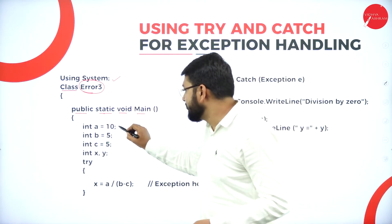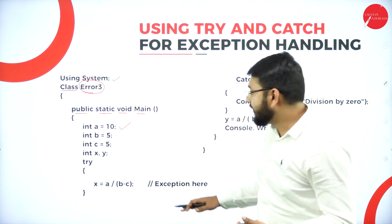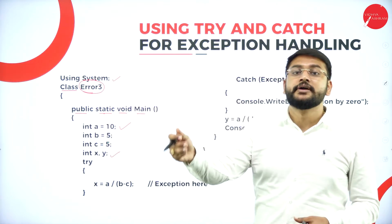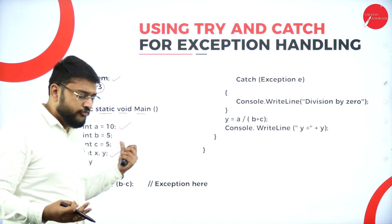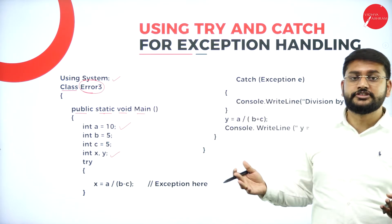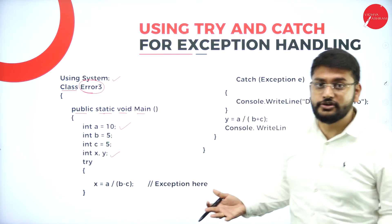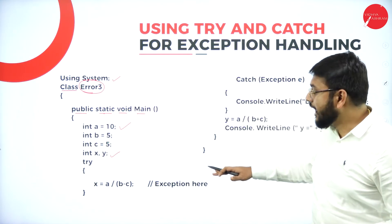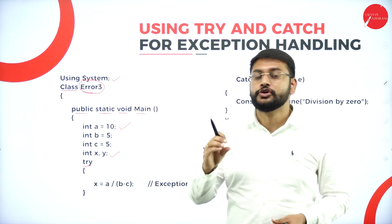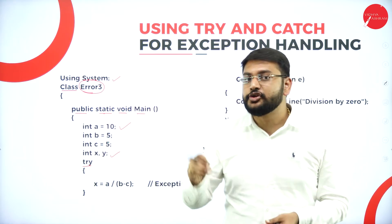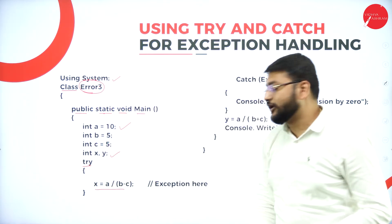After this I have declared some variables: a, b, and c — initialized with values. Then I have declared two more integer variables x and y. Now I have the concept of the try block. I'm going to type 'try' — that's a keyword used to define the try block. Whatever logic you want to execute in this program, you place it inside this try block.